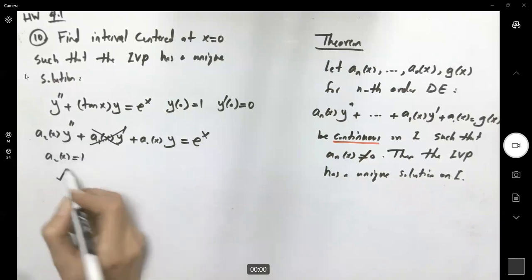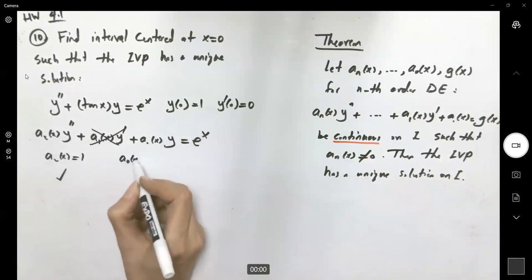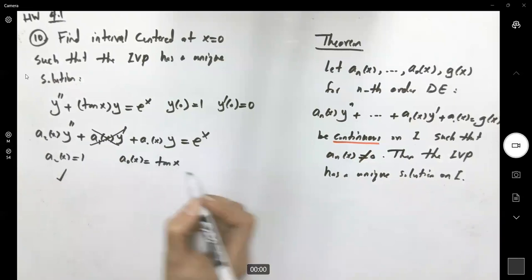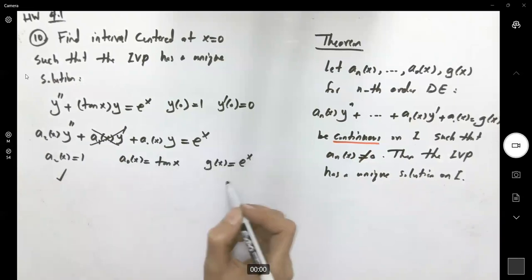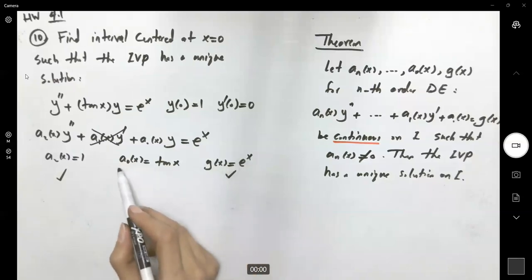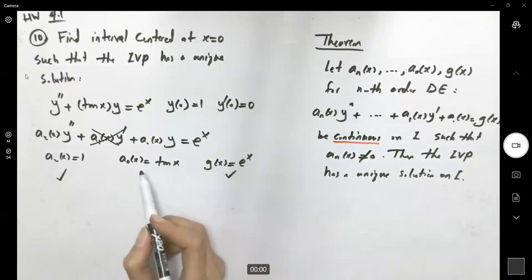a₂(x) = 1, we're good with this one. But a₀(x) = tan(x), and we have to be careful. g(x) = e^x is continuous everywhere, but tan(x) is a tricky function.